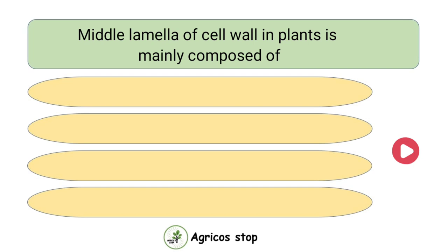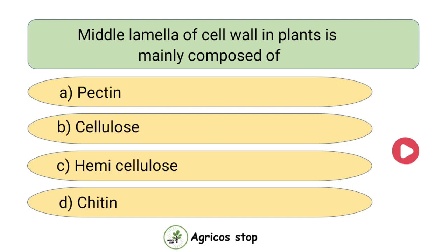Middle lamella of cell wall in plants is mainly composed of? Options are Pectin, Cellulose, Hemicellulose, and Chitin. The answer is Pectin. Middle lamella of cell wall in plants is mainly composed of Pectin, mainly in the form of Calcium and Magnesium pectates.